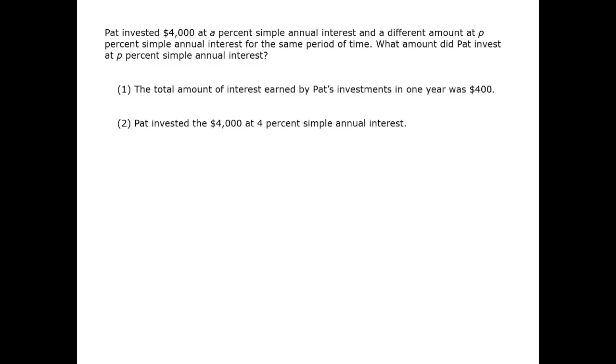In this question, we have a lot of missing information in the question prompt. The two amounts and two interest rates are four pieces of information, and we start with only one of them defined. The second amount is what we are looking for. Call that X.